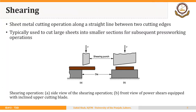First we will discuss shearing or simple cutting. Sheet metal cutting along a straight line between two cutting edges is called shearing. It is typically used to cut large sheets into smaller sections for subsequent press working operations. The sheet is the product of rolling, so we have long rolls of sheets available, and those long sheets are cut into smaller lengths based on certain requirements — just like large pieces of fabric produced in a textile industry are cut into smaller lengths.